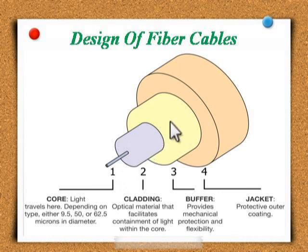The third one is the buffer. It provides mechanical protection and flexibility. The fourth one is the jacket. It is the outermost layer of the cable. It is made up of plastic, and it seals the cladding and the core from moisture, crushing, and abrasion.